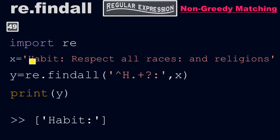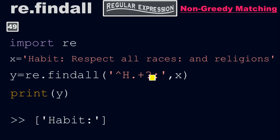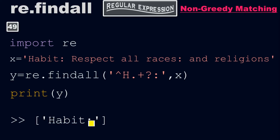So we are going to start from the beginning up to the first colon — we won't go up to the second colon. Because if you remember in the last example, we had a regular expression with a greedy nature. But this time, if you put the question mark, it will make it non-greedy. Therefore, it will go up to only the first colon. When you print y, you will get 'habit' with colon.